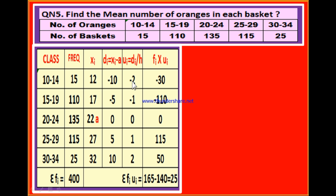After writing the frequencies and ui, now multiply fi with ui. 15 into minus 2 is minus 30; 110 into minus 1 is minus 110; 135 into 0 is 0; 115 into 1 is 115; 25 into 2 is 50. Adding positive values: 115 plus 50 is 165. Adding negative values: minus 30 minus 110 is minus 140. 165 minus 140 is 25. Therefore sigma fi·ui = 25, and sigma fi = 400.